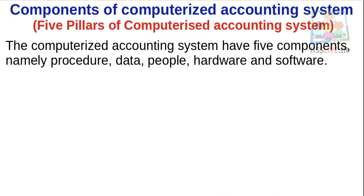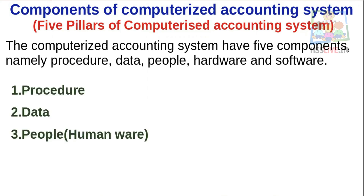Let me explain the 5 Components of Computerized Accounting System. First one: Procedure. Number two: Data. Number three: People, or Humanware. Number four: Hardware. Number five: Software.